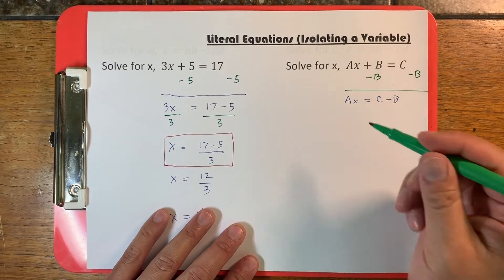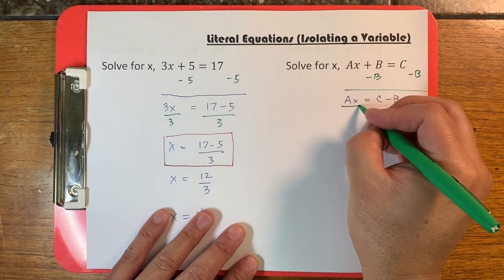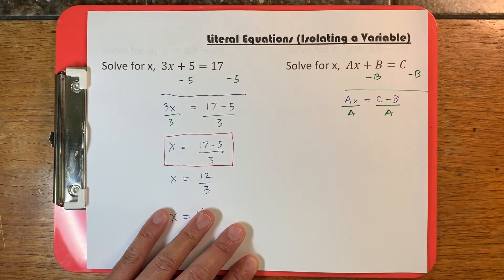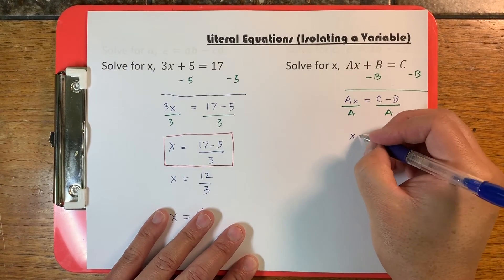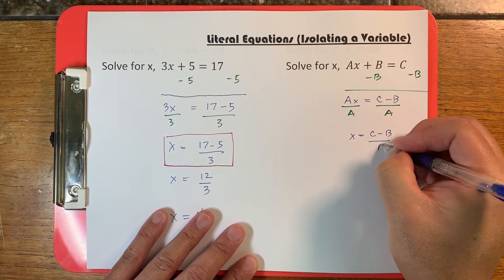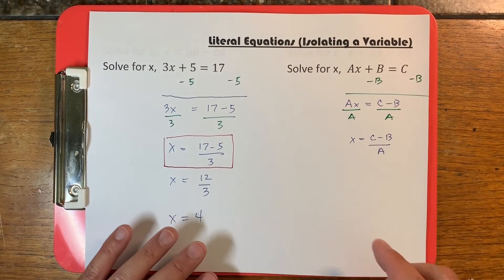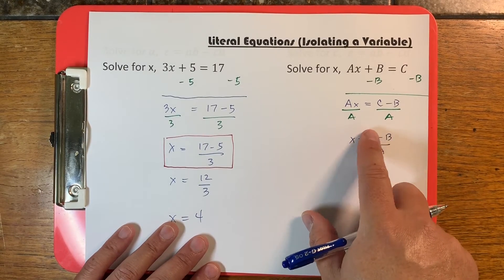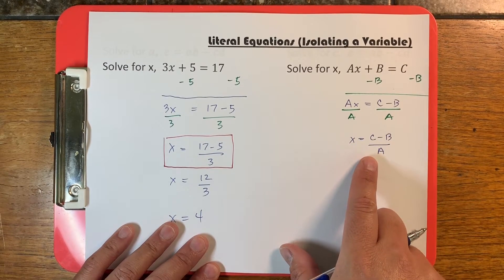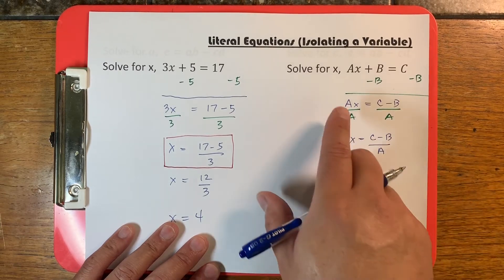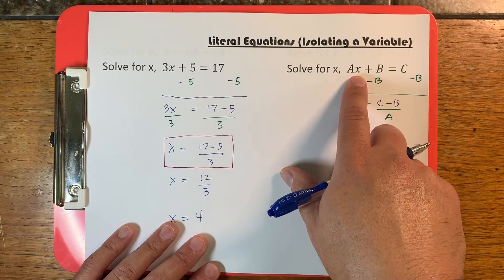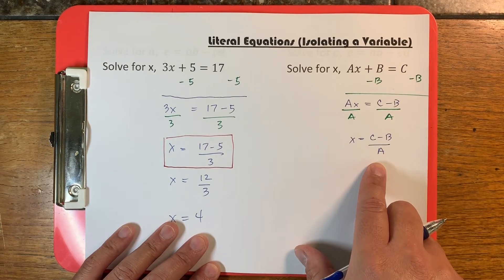Then I'm going to divide both sides by a. Now we have to stop here because these are not numbers — these are variables, and we can't actually subtract them further. So if I wanted a formula for what x equals, this is what it would be: x is equal to c minus b divided by a.